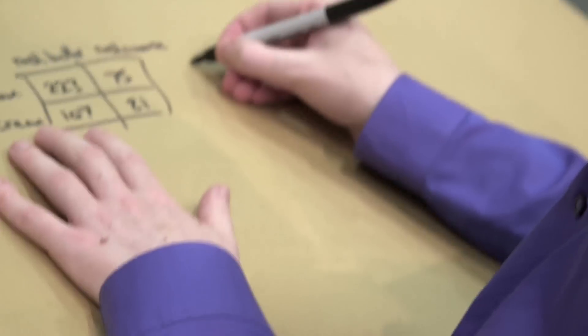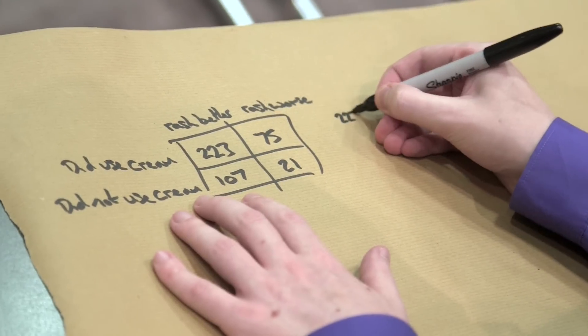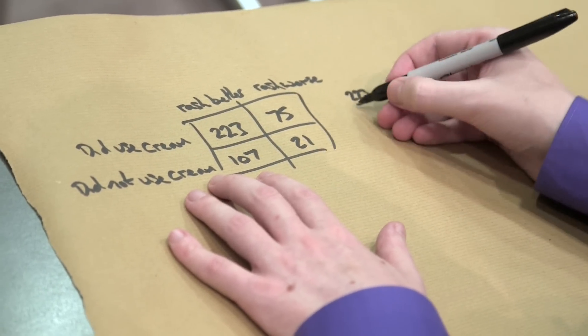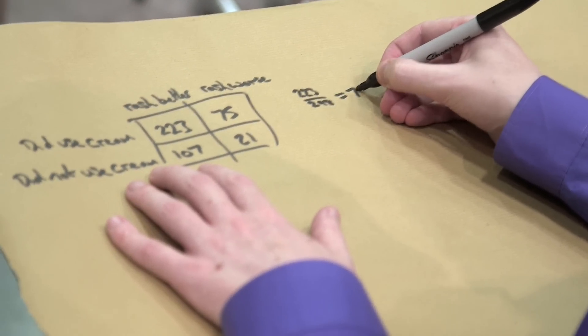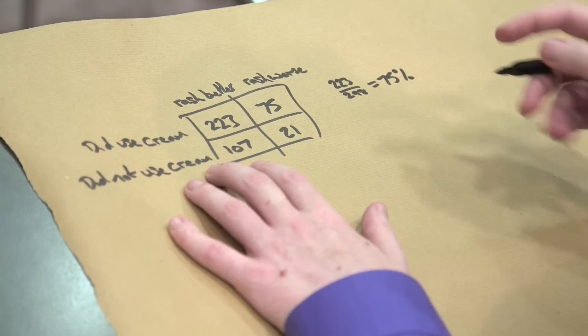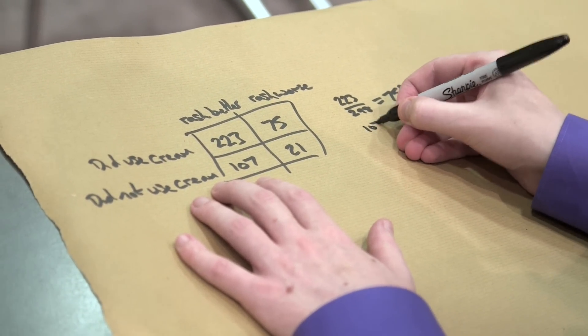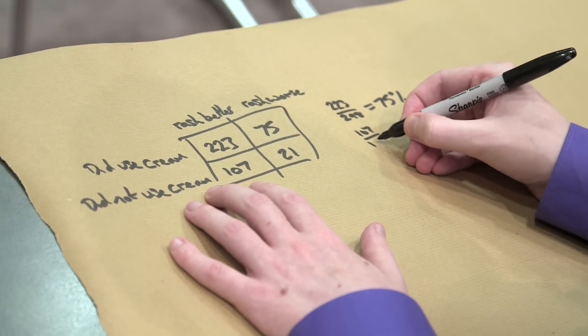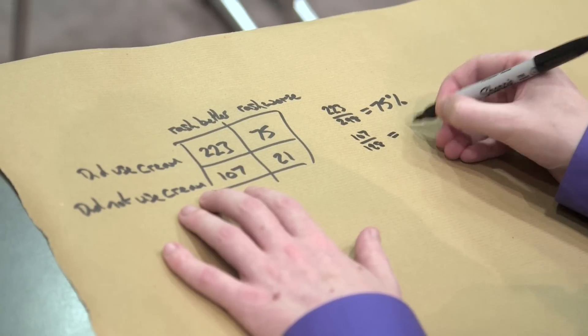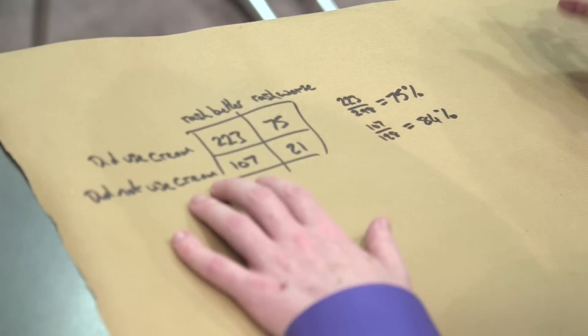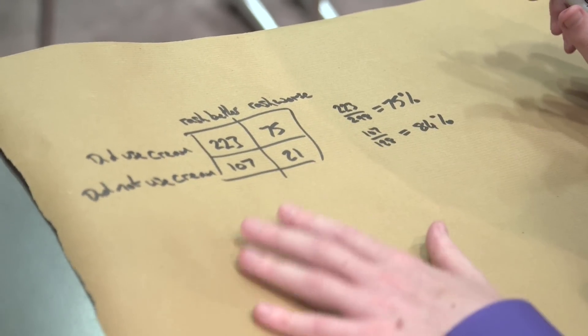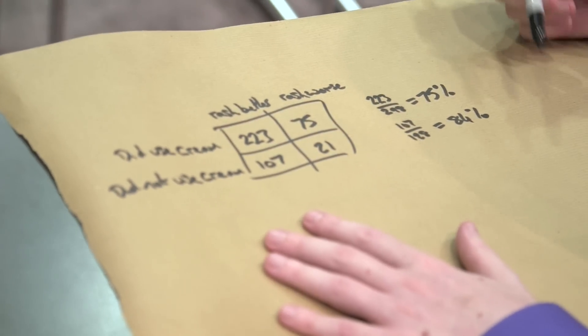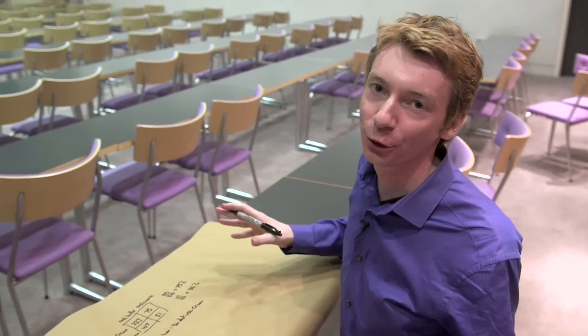So if you do look at the percentages, how many people did it cure? 223 out of, and then how many people were tested? 298. And that's about 75%. And if you look at the people who did not use the cream, 107 people were cured out of 128. This is about 84%. So what you've got here is the people who did not use the cream are actually getting better than the people who did use the cream. So the correct conclusion is don't use the cream. So that's the neutral question.